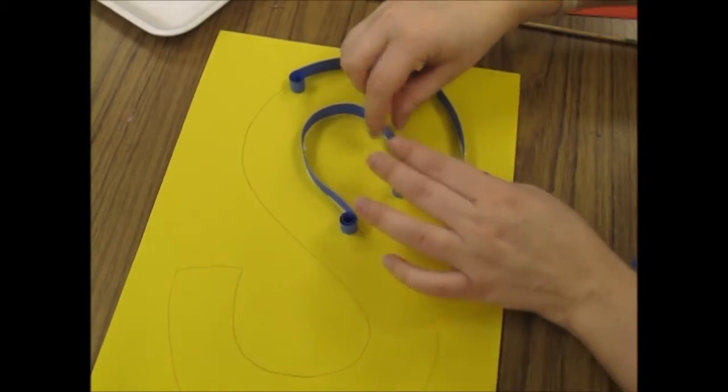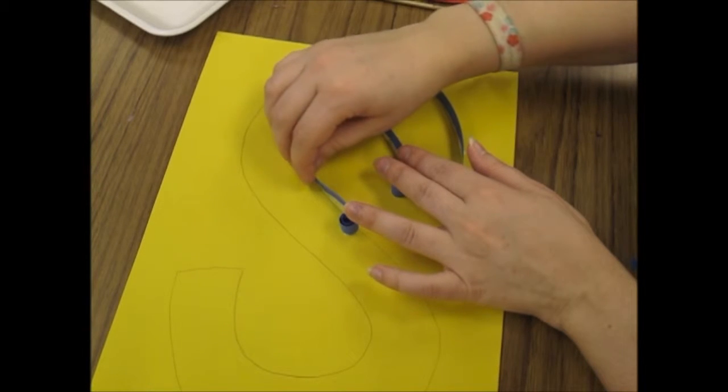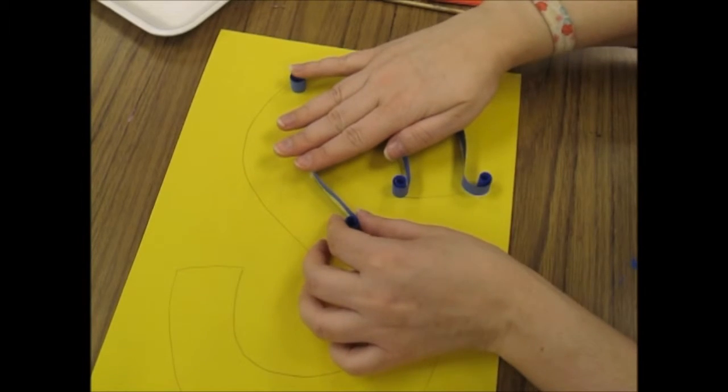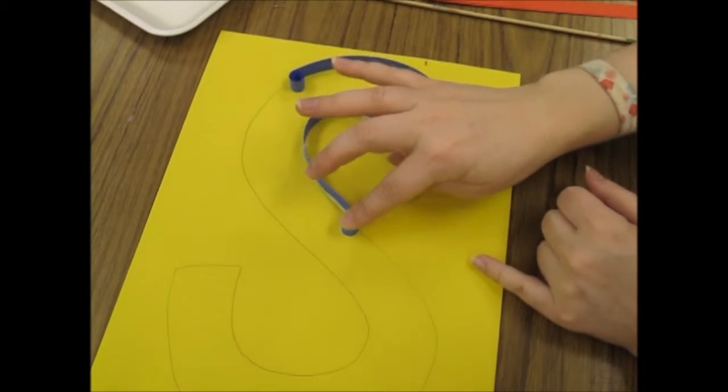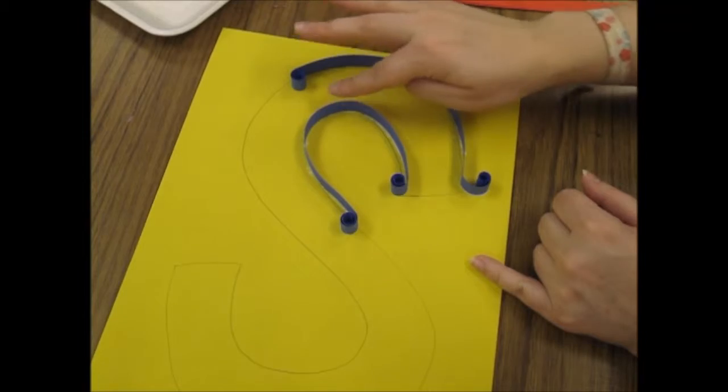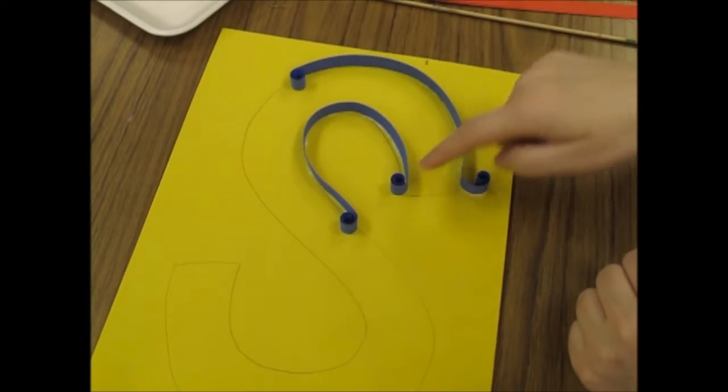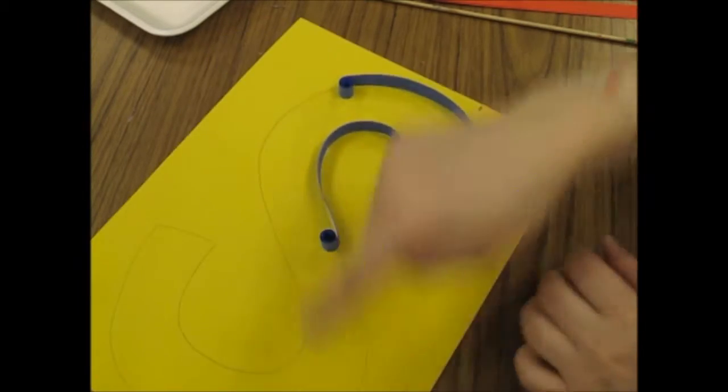If I don't put it in the right place the first time, you can kind of always pick it up and move it around. This glue dries clear, so you don't have to worry about seeing any glue mess-ups. And now I can continue these lines all the way down and attach them.